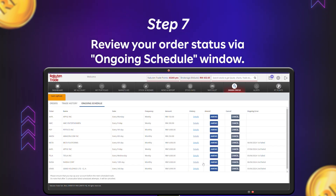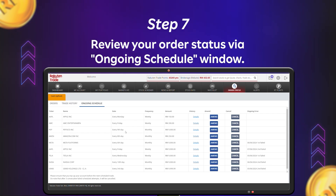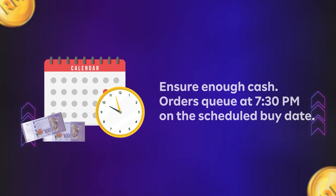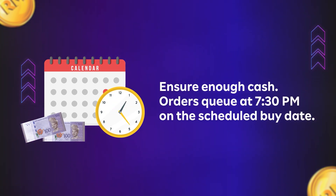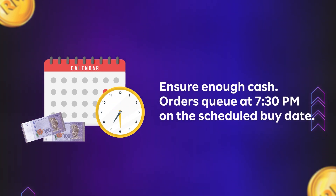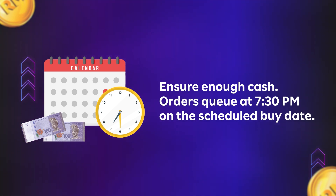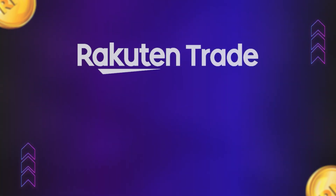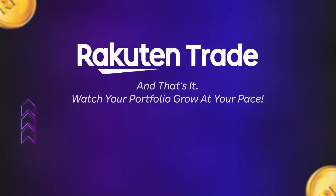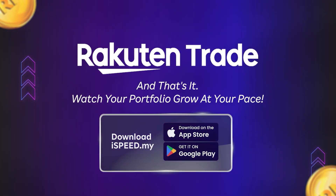Step 7: To check the order status at any time, go to the ongoing schedule window. Don't forget that your order will be placed in queue at 7:30pm on the day of the scheduled buy. So do make sure you have sufficient cash balance to execute the order. And that's it — thank you for watching.